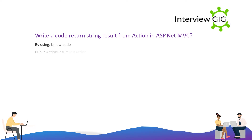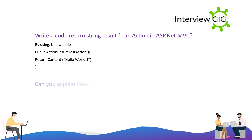Write code to return a string result from an action in ASP.NET MVC. By using the below code: public ActionResult TestAction() { return Content("Hello World"); }